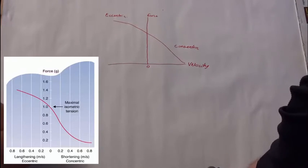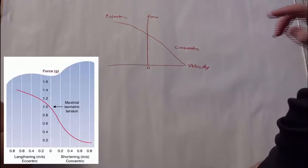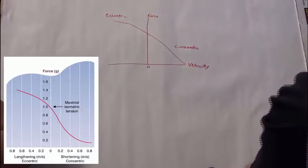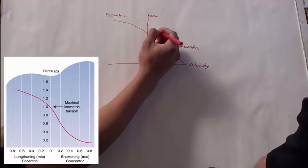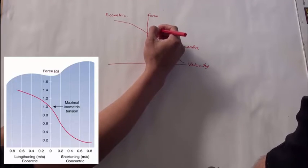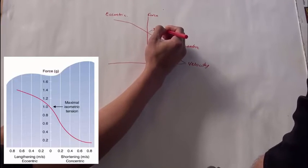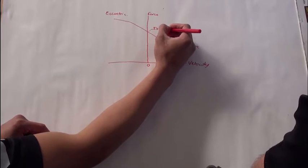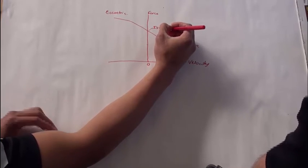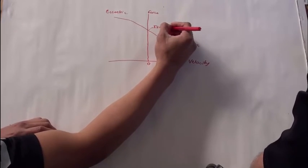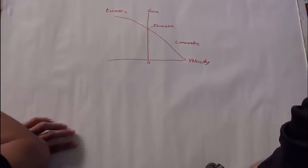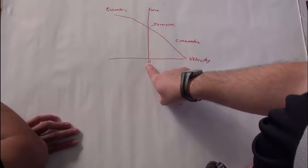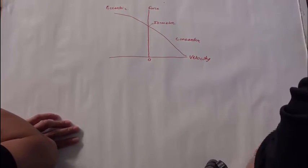Alright. So concentric, eccentric, where would isometric be? Isometric would be in the middle here. Good. Because isometric, iso means same or equal. Iso same, metric is a measure. So this is where we contract but don't move. And so that means we're at zero velocity. Good. Alright.